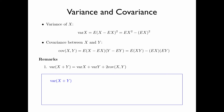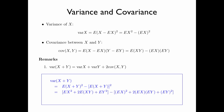The proof is as follows: the variance of x plus y equals E[(x+y)²] minus (E[x+y])². By expanding both terms, E[x²] minus (E[x])² gives Var(x), E[y²] minus (E[y])² gives Var(y), and E[xy] minus E[x]·E[y] gives Cov(x, y), yielding the result.